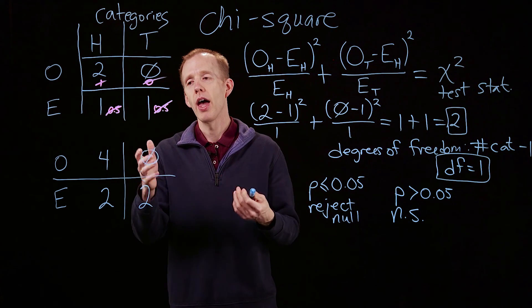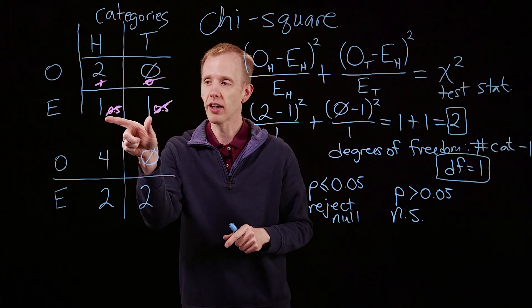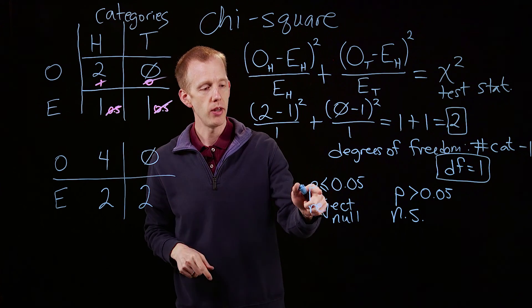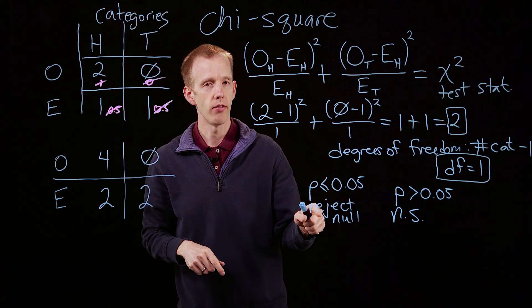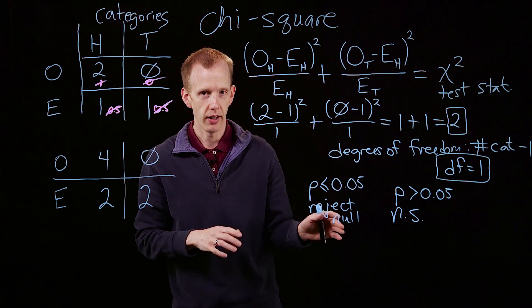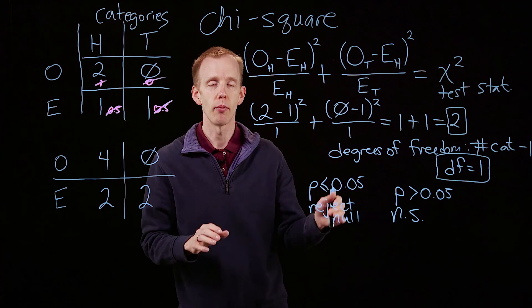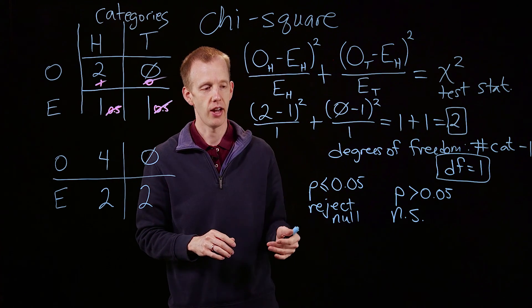And we were guessing, or assuming, that this coin had a head side and a tails side. And it's only when the p-value is smaller than 0.05 that we would reject that hypothesis. We would say, you know what? We now have enough evidence to suggest that that coin probably doesn't have a tails side.